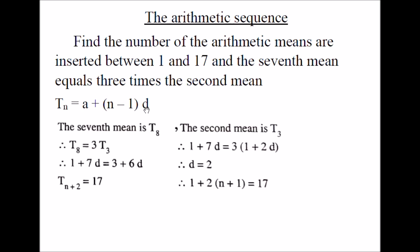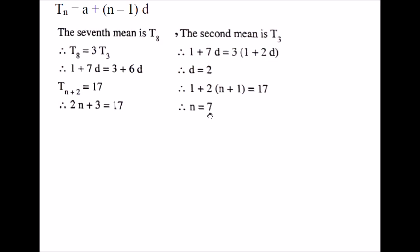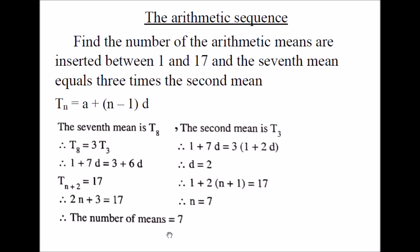Use the rule for the general term Tn to find the number of terms. Assume the number of arithmetic means to be N. The number of terms of the sequence is N plus 2 (first and last term included), so the last term is T(N+2). The last term is 17. Using the general term rule: A is 1 and the exponent is N plus 2 minus 1, giving N plus 1 times D which is 2. So 1 plus 2 times N plus 1 equals 17. Simplify and solve: N equals 7. Therefore the number of means that can be inserted between 1 and 17 equals 7.